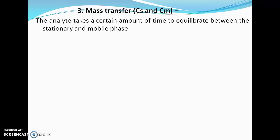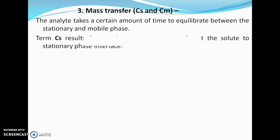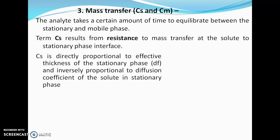The third term is mass transfer resistance (C), which has two components: Cs and Cm. The analyte takes a certain amount of time to equilibrate between the stationary and mobile phase. The term Cs results from resistance to mass transfer at the solute-to-stationary-phase interface. Cs is directly proportional to the effective thickness of the stationary phase (df) and inversely proportional to the diffusion coefficient of solute in the stationary phase.